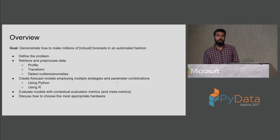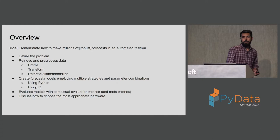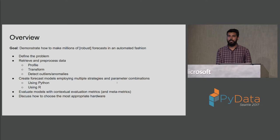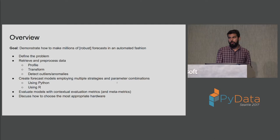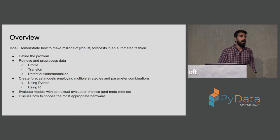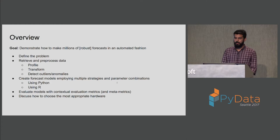The goal of this talk is to demonstrate how we can make millions of robust forecasts in an automated fashion. I'll be defining the problem, then walk you through preprocessing steps for time series data: profiling the data, applying different transformations, and detecting outliers or anomalies. Once we know how to preprocess the data, I'll walk you through forecasting strategies using packages from Python and R. Then I'll cover evaluation metrics to calculate forecast quality, and finally how to choose the best hardware for our use case.